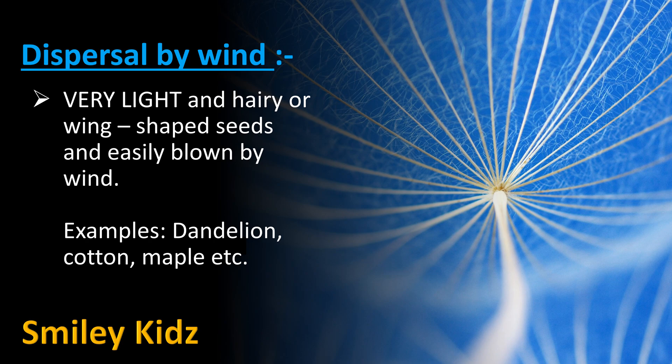Now let us see each one in detail. Dispersal by wind. Seeds which are dispersed by wind have very light and hairy or wing-shaped seeds and are easily blown by wind. Examples are dandelion, cotton, maple, etc.